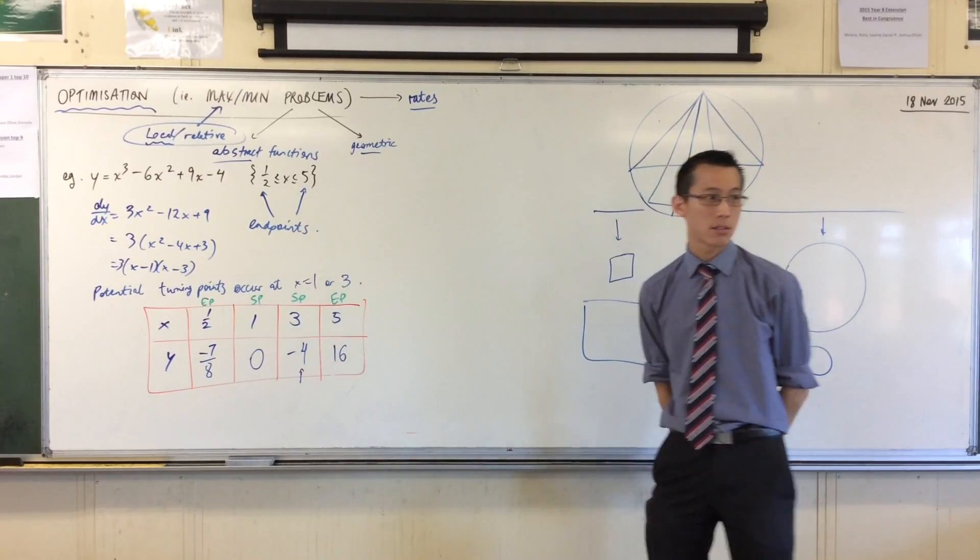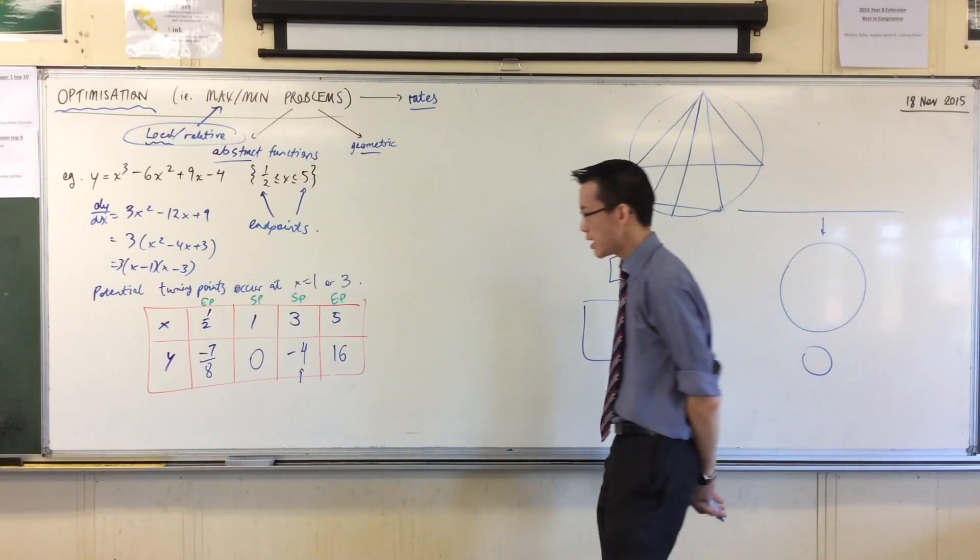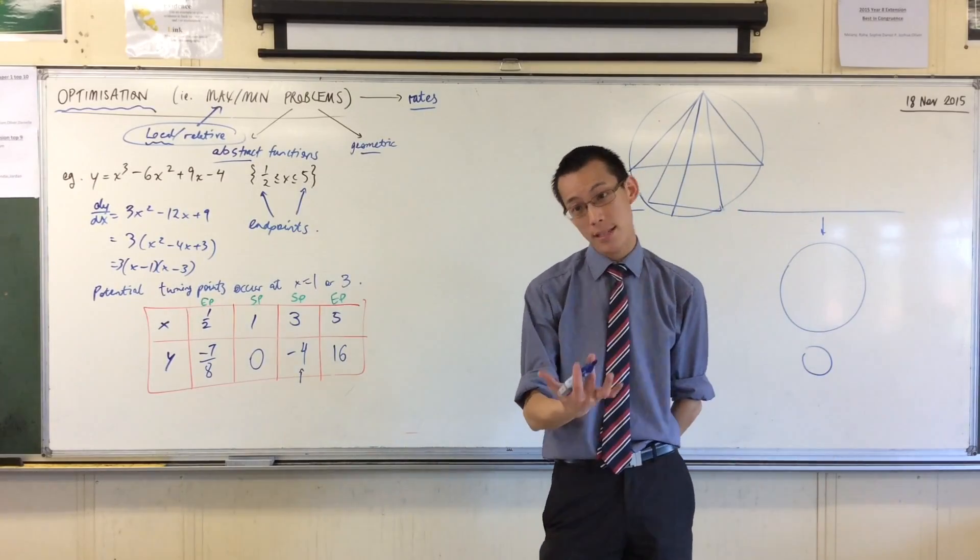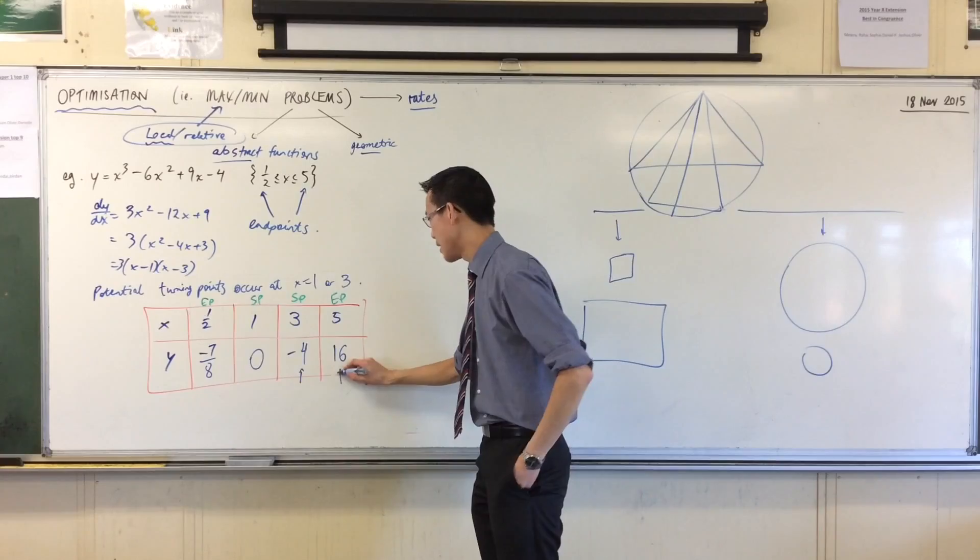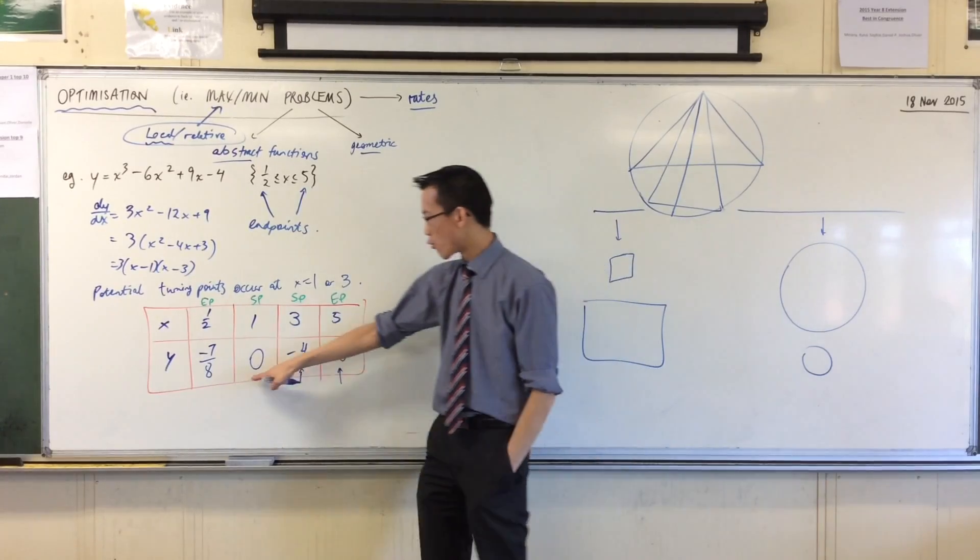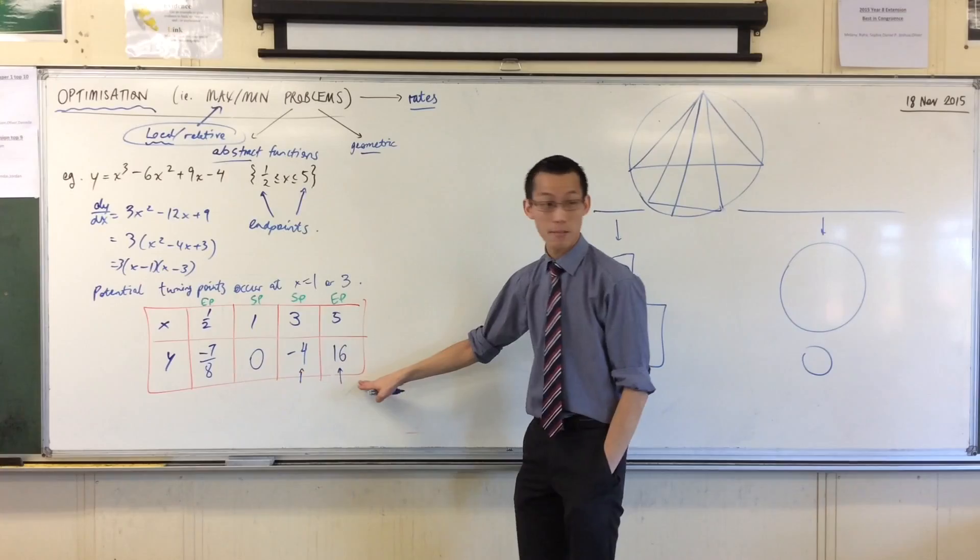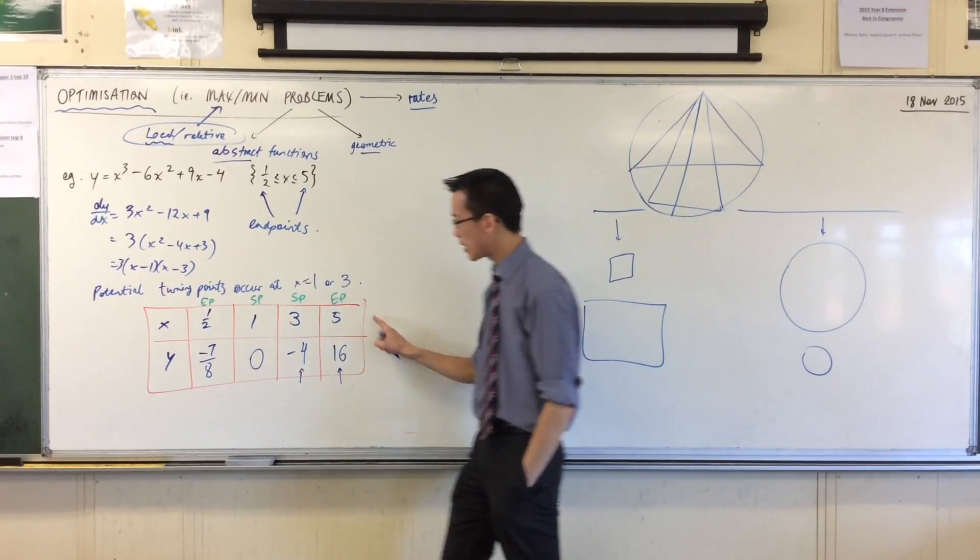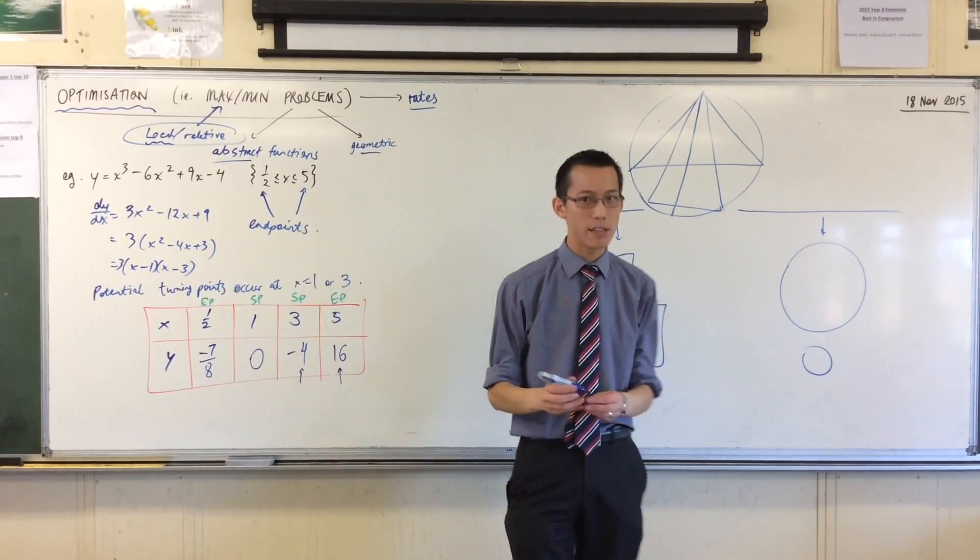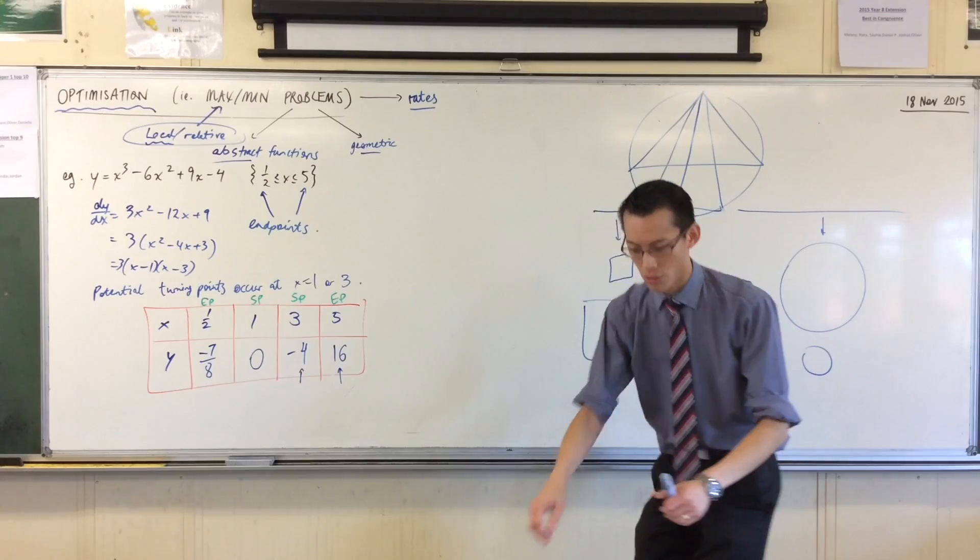Where's the max? It's the maximum itself is 16 and it occurs at x equals 5 it's this guy right. So my relative maximum over here is not the absolute maximum the endpoint is. Now really quickly on the basis of this just really roughly sketch this. It's not hard to draw.